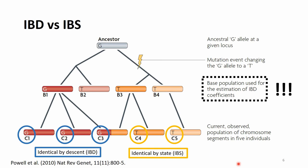Why is this relevant? In inbreeding calculations we look at alleles that are in a homozygous state, but we are specifically interested in alleles that are IBD — exact copies of ancestral alleles, or better said, ancestral segments.